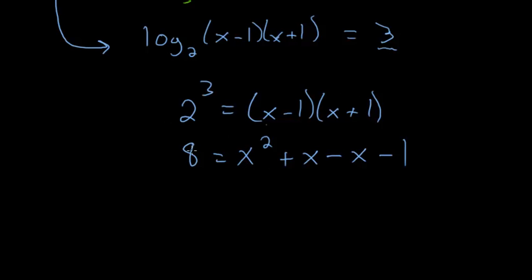And now, setting one side of the equation equal to 0, we can subtract 8 from each side. So that we have 0 is equal to x squared. Plus x minus x is 0. Minus 1 minus 8 is minus 9.